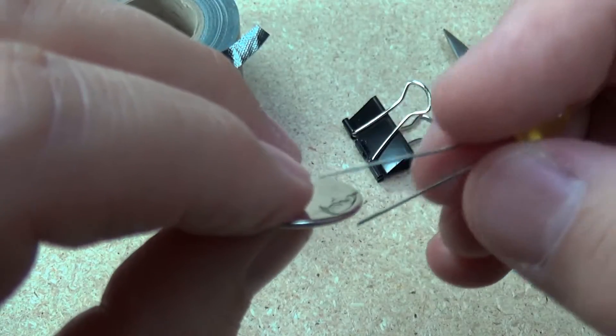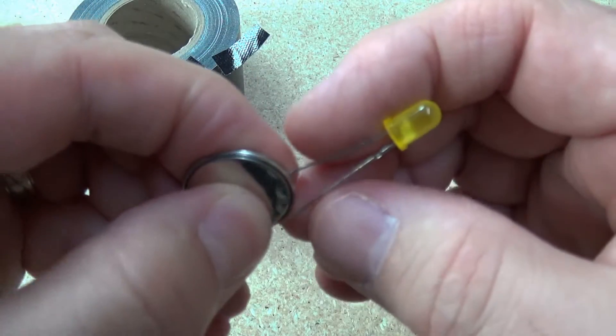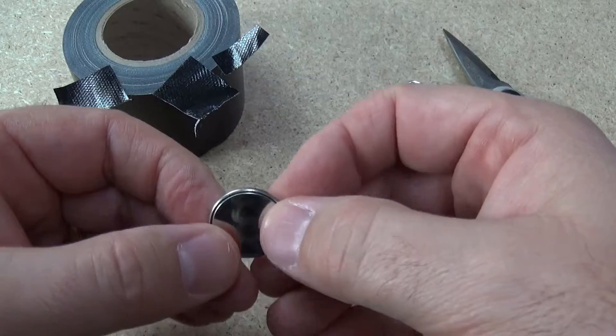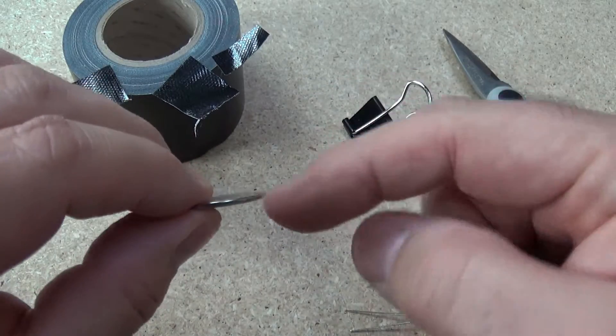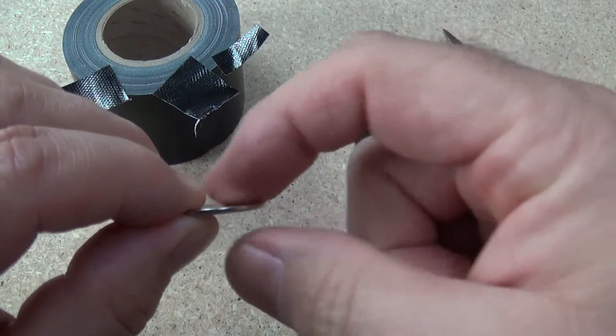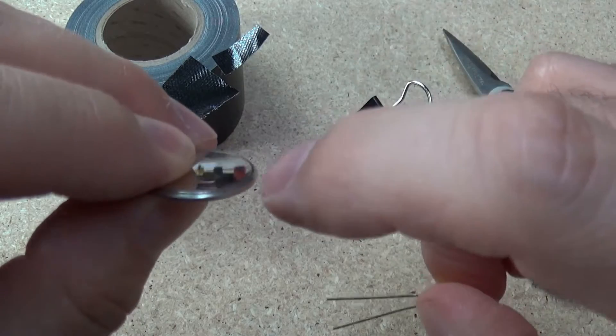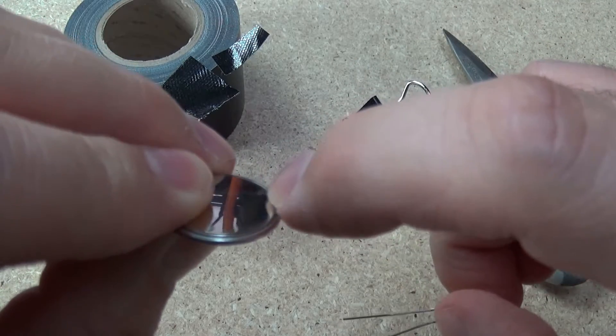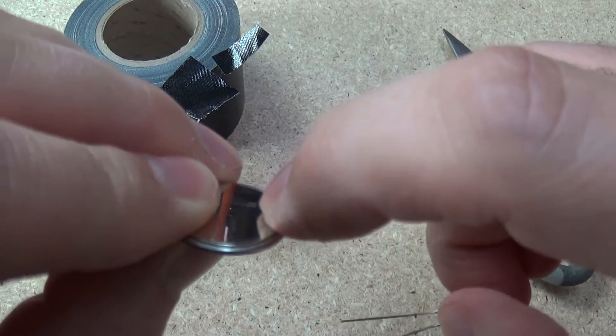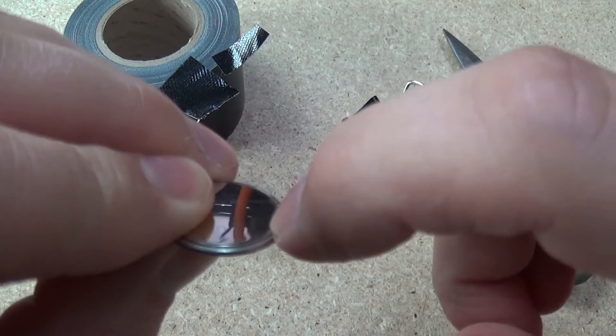So if we try this and just touch the terminals you can see that the LED lights up. Now just to make sure that the legs don't touch the wrong part of the battery, we're going to put a little bit of tape across here just to make sure that the positive leg doesn't come around and accidentally touch the negative part of this battery.